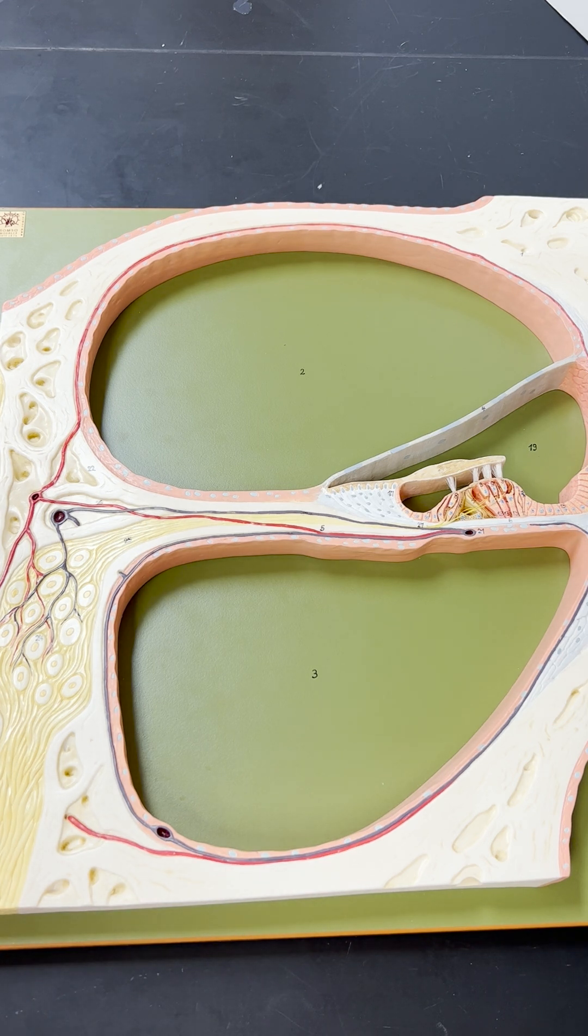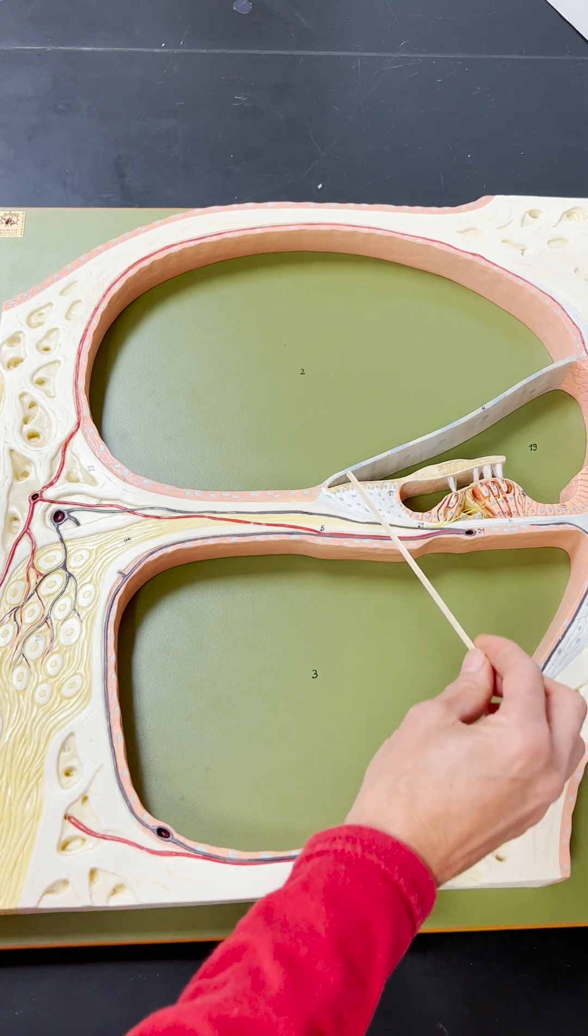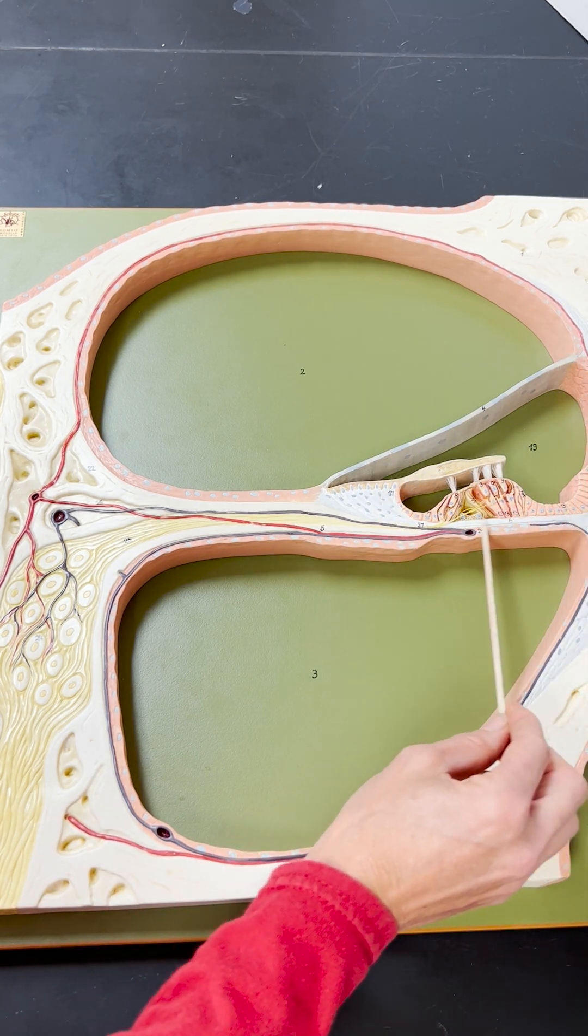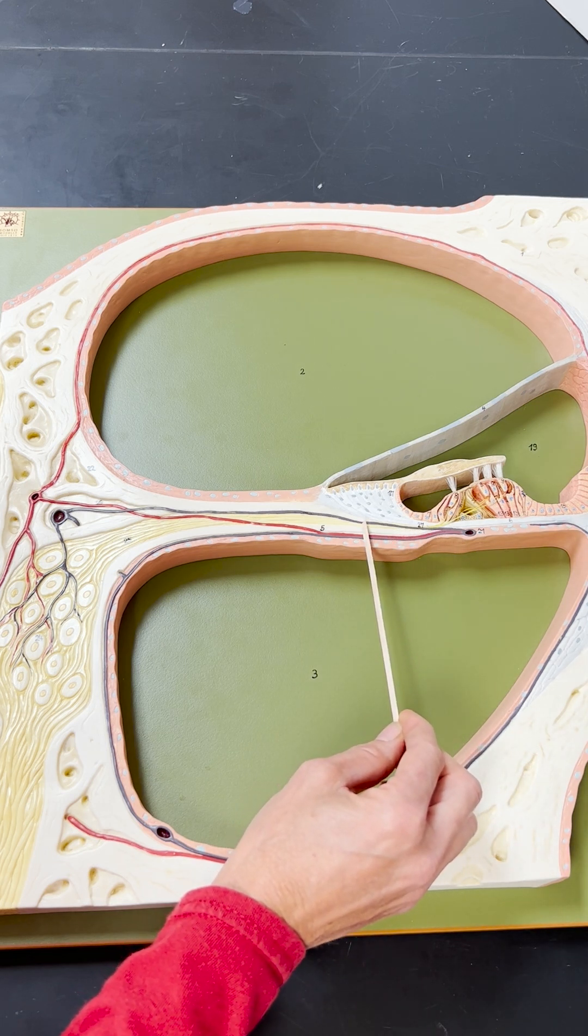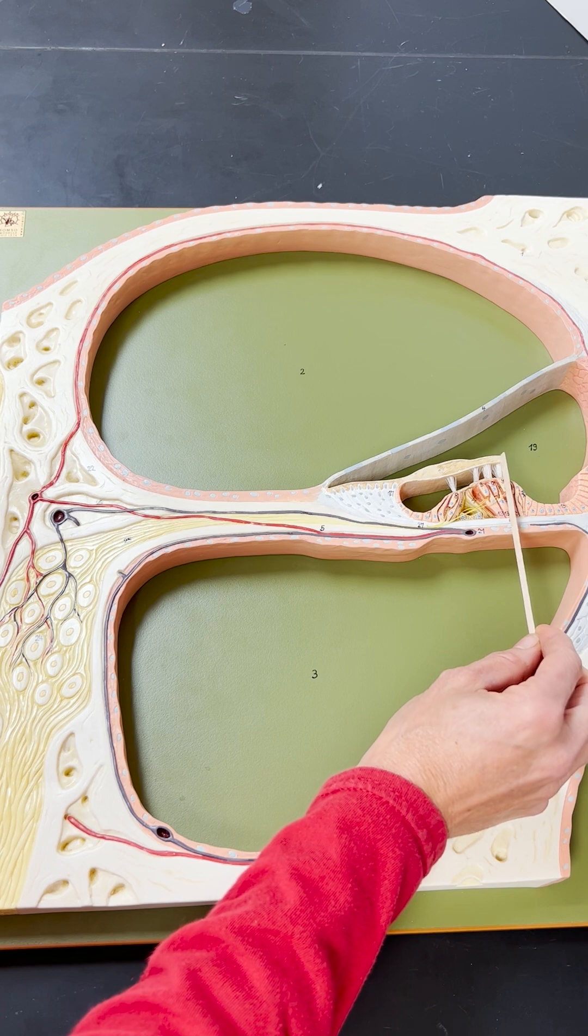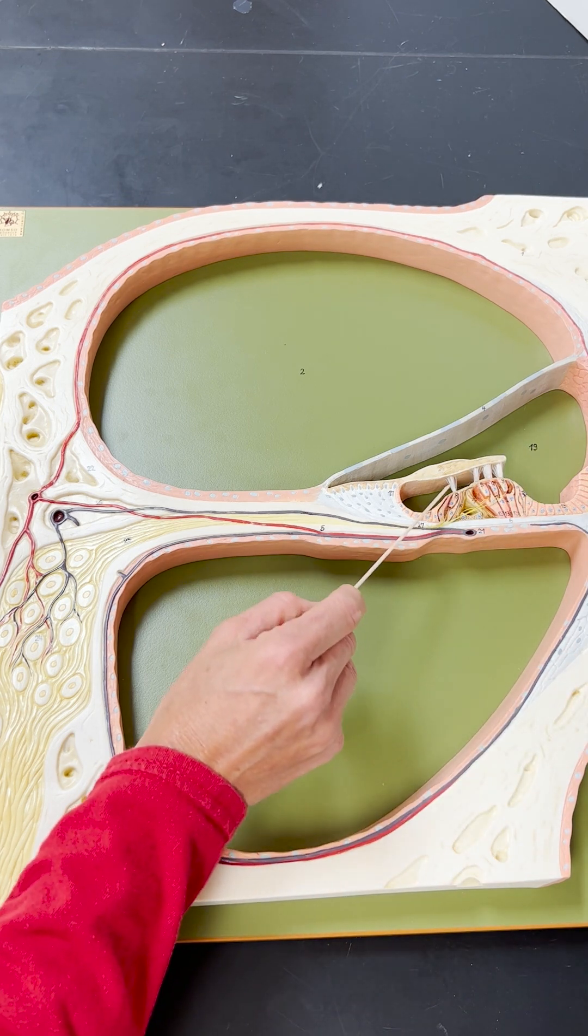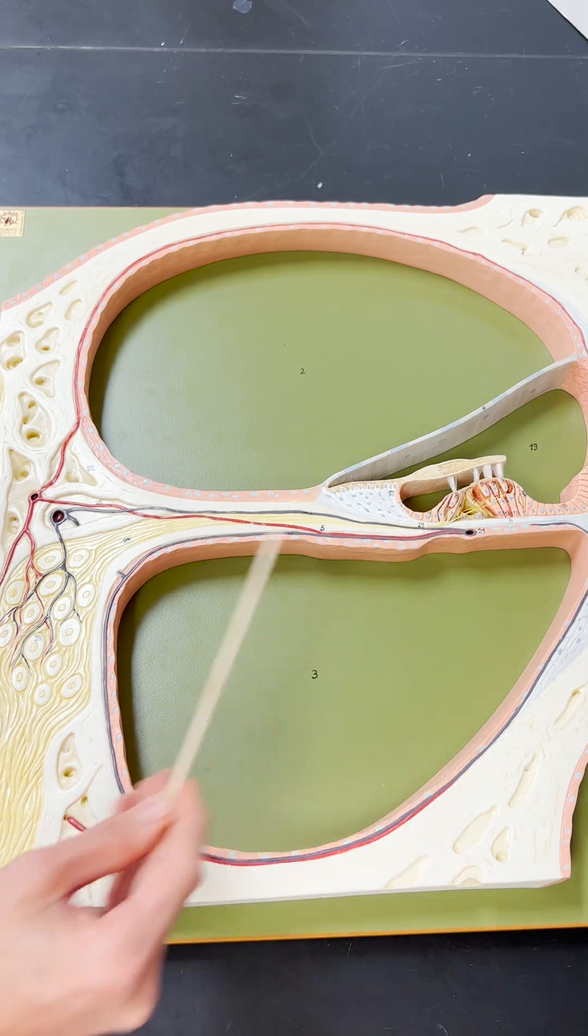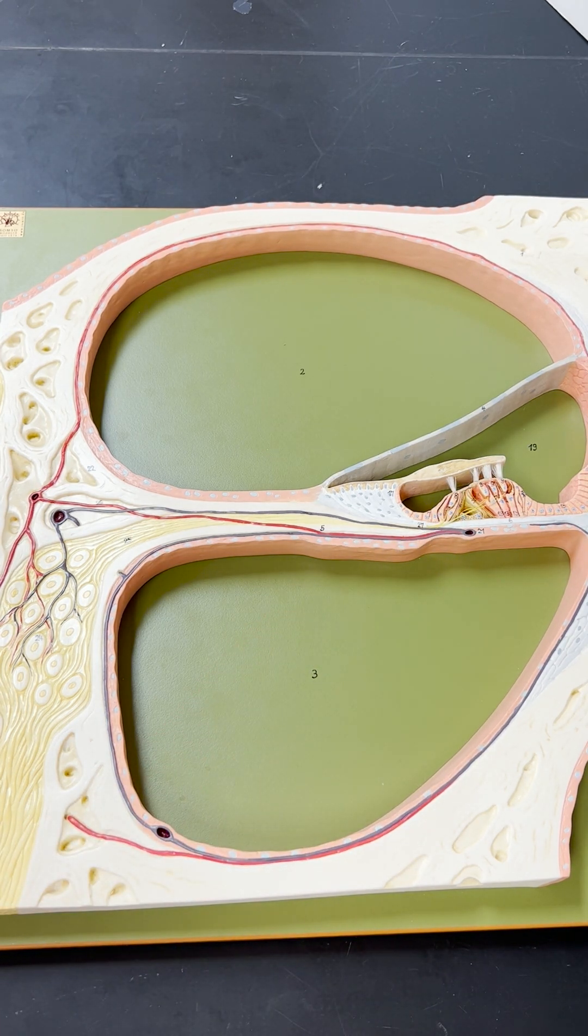Some other structures now that are on your list include the vestibular membrane, which is up here, and the basilar membrane, which is right here. We have the tectoral membrane up here. And then these are the hair cells and you can see the hairs off of those. Those are called stereocilia.